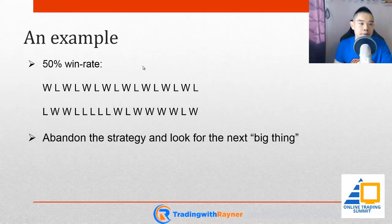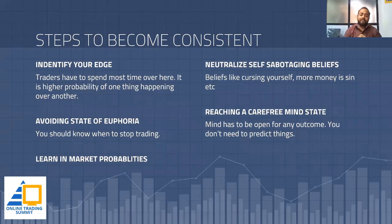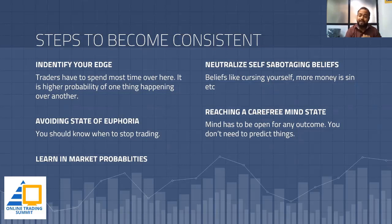So in trading terms, let's say you have a system with a 50% winning rate. Here are the most important points one needs to understand to become consistently profitable. The first thing is to identify your edge. A lot of people don't understand what an edge is. As you can see on the screen, they have to spend a lot of time, because this is the place where there's a higher probability of one thing happening over another. Most traders spend a humongous amount of time understanding their edges.